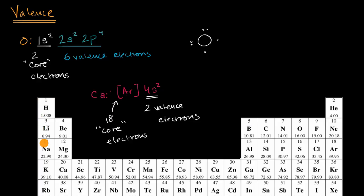This column right over here has one valence electron. This column over here has two valence electrons. This column out here has three valence electrons, four valence electrons, five valence electrons, six valence electrons, and seven valence electrons.